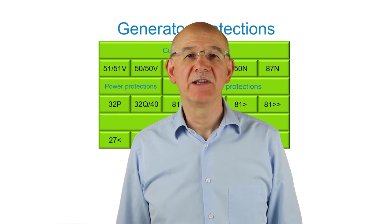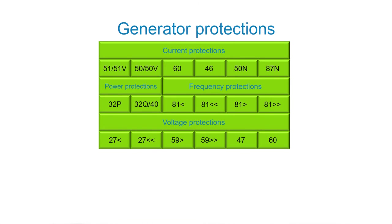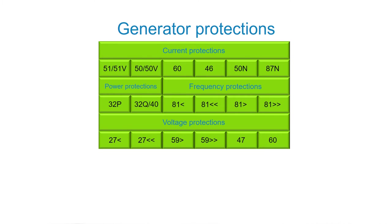Here you can see the IEC codes of the available generator protections. Some of them are quite common for this kind of application, but not so common are the 51V and 50V, which are very useful for generator protection. Also notable is 46 negative sequence current protection, which is very important when asymmetrical loads are used. All protections can be fully configured by threshold and time delay.